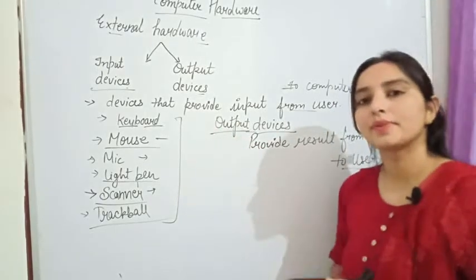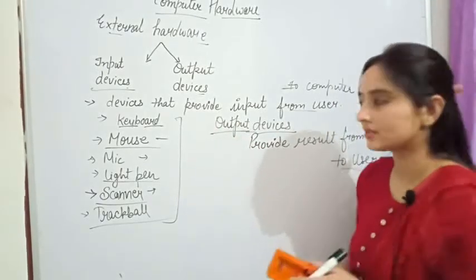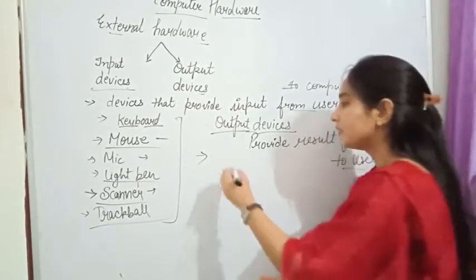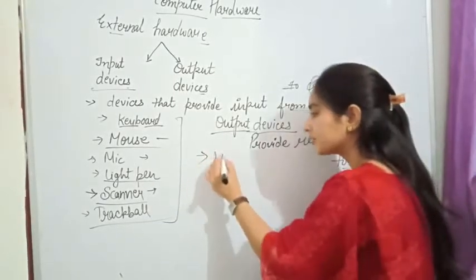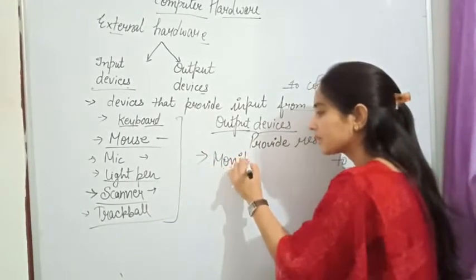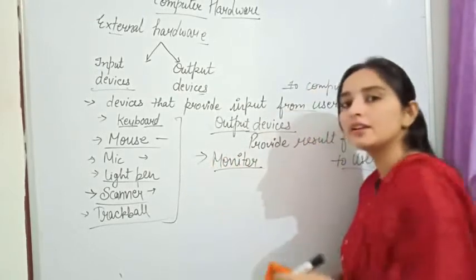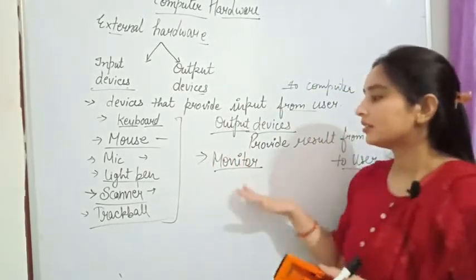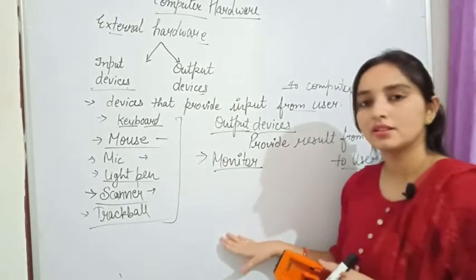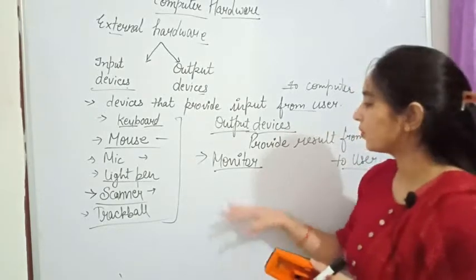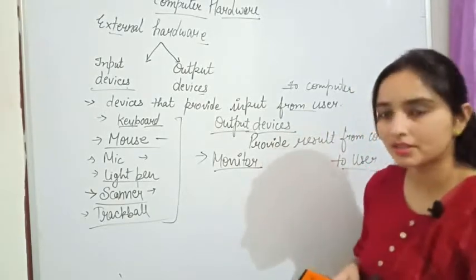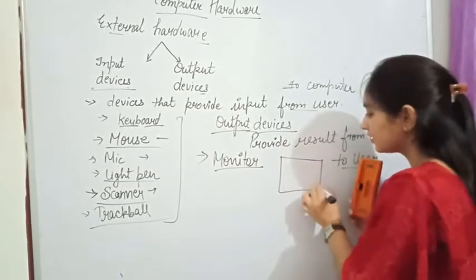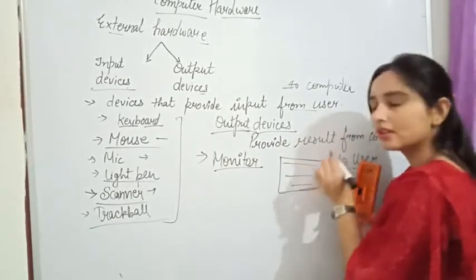Output devices display the processed result. We have various output devices. The first one is the monitor — it is a screen, just like a TV screen, used to display the result. It is the most common output device.